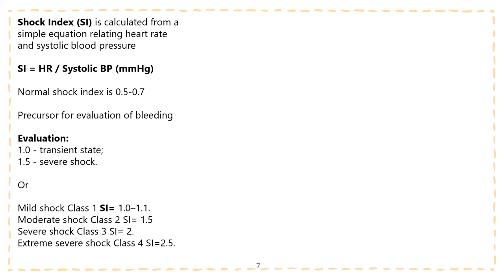To evaluate blood loss you need to know the shock index. Shock index is calculated from a simple equation relating heart rate and systolic blood pressure. Normal shock index is 0.5 to 0.7. It is a precursor for evaluation of bleeding. When shock index is 1, it means a transient state. If the shock index is 1.5, it's severe shock.